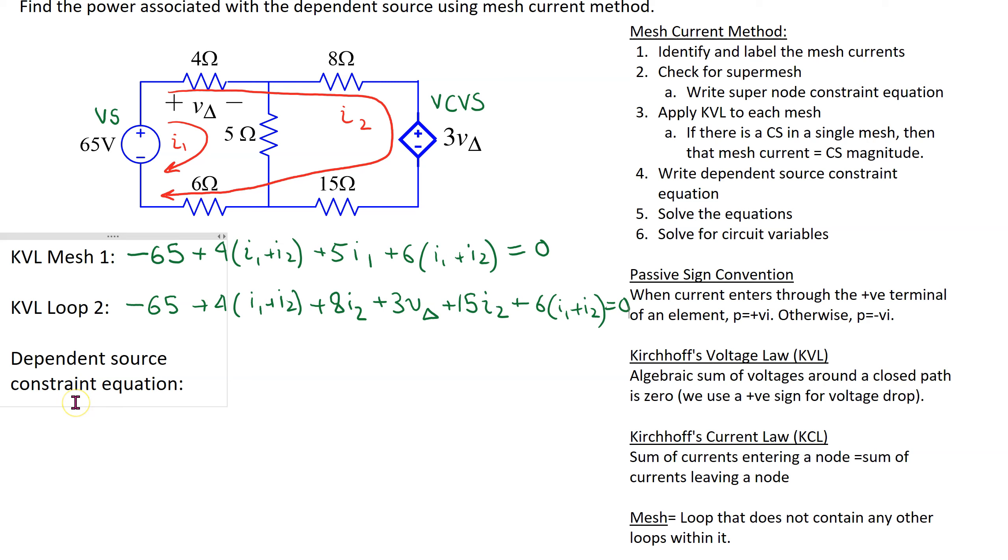Lastly we need to write the dependent source constraint equation. So we need to address the voltage controlling the magnitude of the dependent source in terms of the currents. So here V delta is the voltage drop across the 4 ohm resistor. And V delta is given as 4(I1 plus I2).